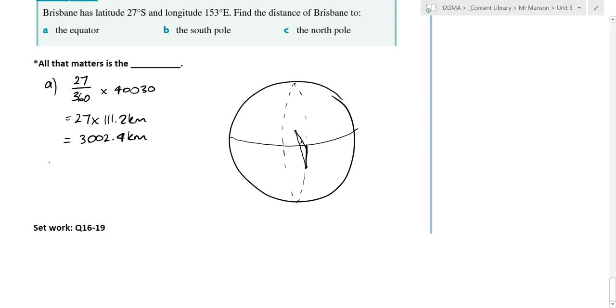Now, the second one is to the South Pole. We're still on the same great circle. The South Pole is here, so if this bit here is 27 degrees, what's this bit? We're talking about this segment.